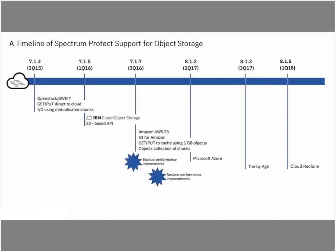Let's take a look at our cloud container storage pools — a quick overview, a timeline of how we've added support for object storage over time with the Spectrum Protect server. Initially with 7.1.3, back in 2015, we launched our support with OpenStack Swift — that was our initial foray into object storage. Back then we were using individually duplicated chunks for our I/O pattern to object storage. Moving into 7.1.5, we launched support for IBM Cloud Object Storage System, initially Cleversafe using the S3-based API. In 7.1.7, third quarter 2016, we added support for Amazon's AWS S3, as well as introduced some performance enhancements on both the backup and restore side that helped us reach some of the scalability targets we were after.